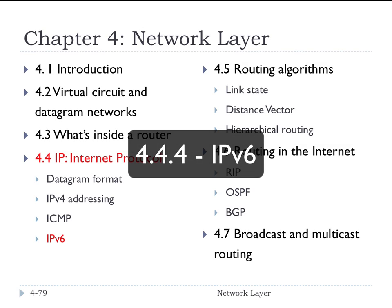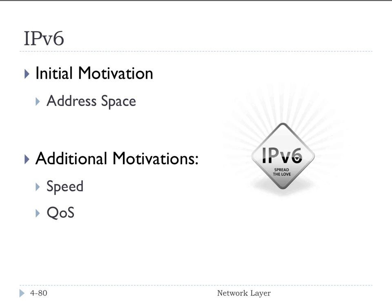The last part of section 4.4 is about IPv6, the new version of IP. As we already mentioned, the initial motivation for this is that we're running out of IP addresses with IPv4. Because that 32-bit address space has been allocated, we need more IP addresses, and that's what this protocol was primarily designed for.